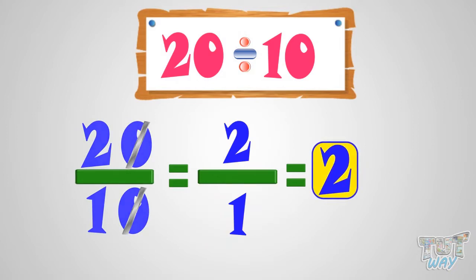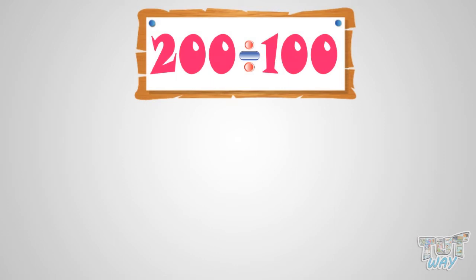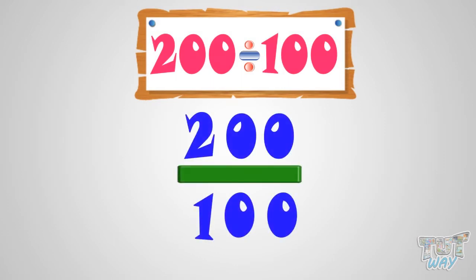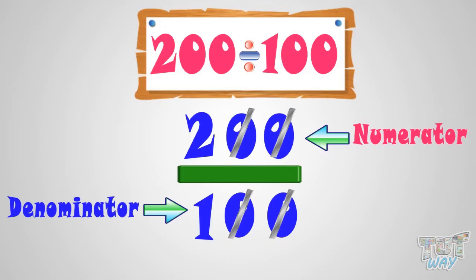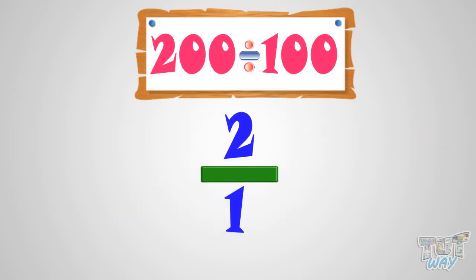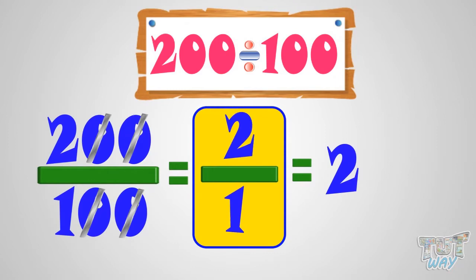Now let's take another example. We have to divide 200 by 100. We write it like this. In order to divide with 100, we have to cut the two rightmost zeros from the numerator and denominator. And you are left with 2 by 1, and any number divided by 1 is the same number. So, 200 by 100 equals 2 by 1 equals 2.